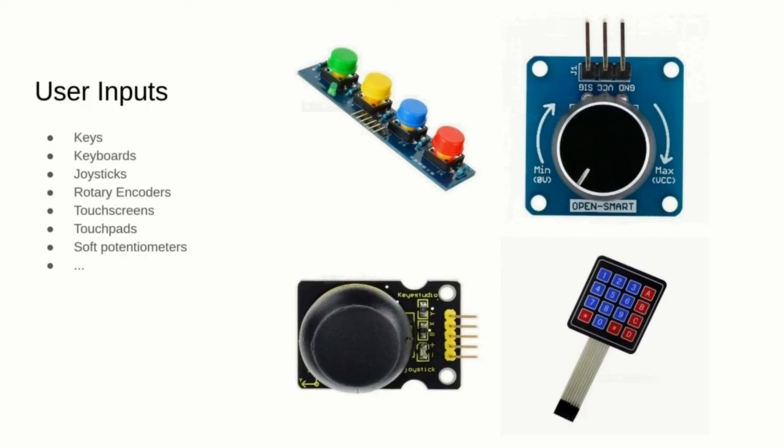Joysticks and touch screens take two analog signals for the X and Y axes that need to be read using some of the few analog input/output pins of the microcontroller, which has an internal analog-to-digital converter to digitalize the signals into bits. Rotary encoders, linear potentiometers, and soft potentiometers also use a single analog pin.